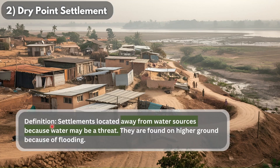What is the definition of a dry point settlement? These are settlements located away from water sources, because water may be a threat. They are found on higher ground because of flooding.